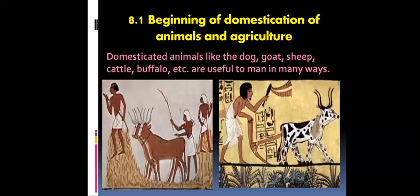When all three steps were achieved, the animal is considered domesticated. Domesticating wild animals and keeping them for their own use is known as animal husbandry.